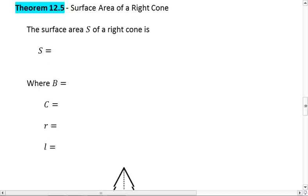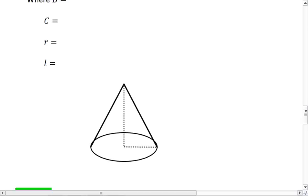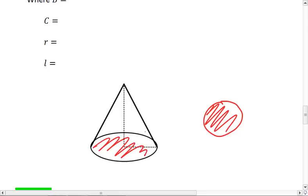But let's look at this. So we have the surface area of a right cone. To do that, we recognize that the net of this cone is our circular base, and then we take the lateral area,